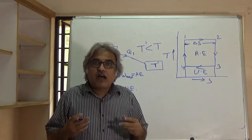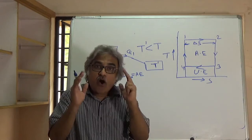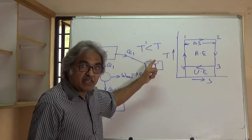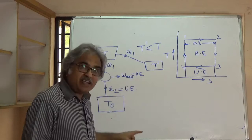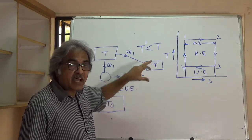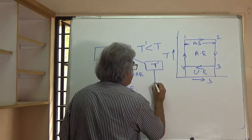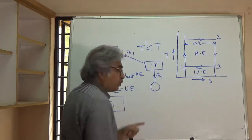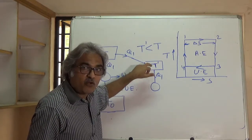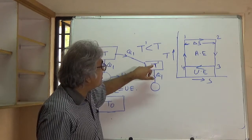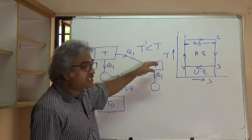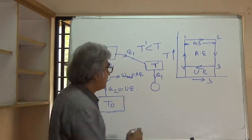Heat is now available from T dash, and you want to find out how much is the available energy of Q1. To do this, you run a Carnot engine between T dash and T0, because T0 is the lowest temperature. The heat Q1 — same Q1, please note — is now coming from a source at temperature T dash. There is irreversible heat transfer, so heat goes to this intermediate body first, and then you run a Carnot engine to find the available energy, with T0 as the sink.